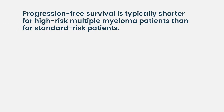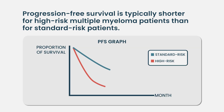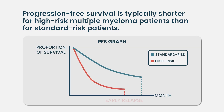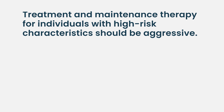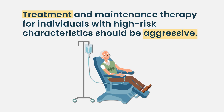Especially if patients have more than one of those high-risk markers — what we call a double hit — they have even greater risk of early relapse with treatment. Just knowing that you have high-risk chromosome changes means we want to be particularly aggressive with treatment and with maintenance therapy, rather than the standard run-of-the-mill approach that might lead to earlier relapse.